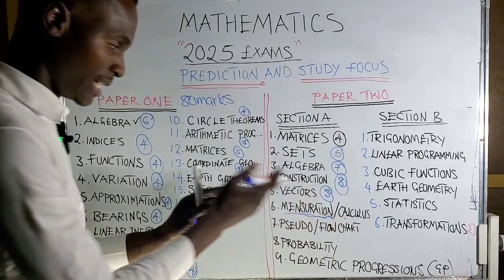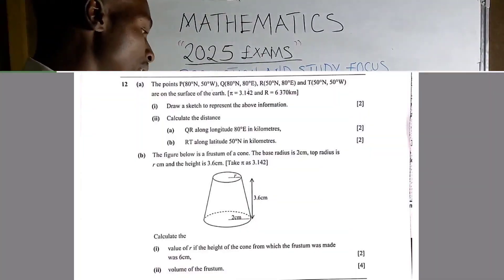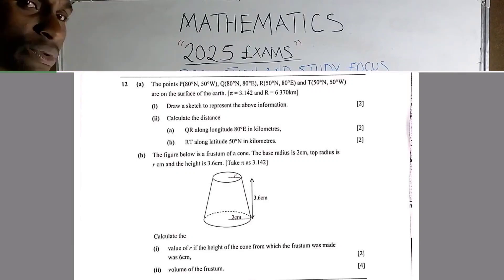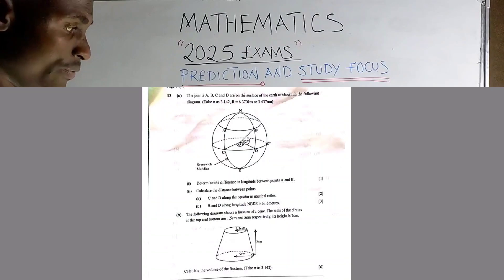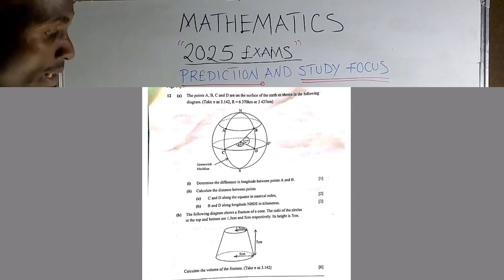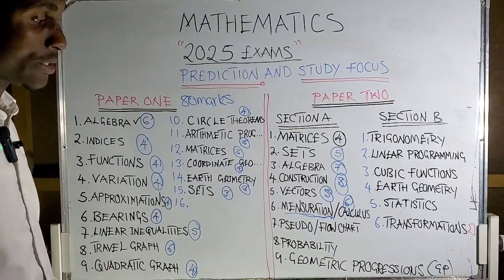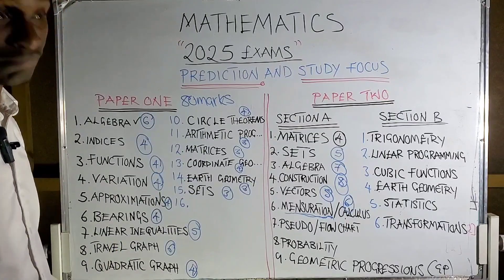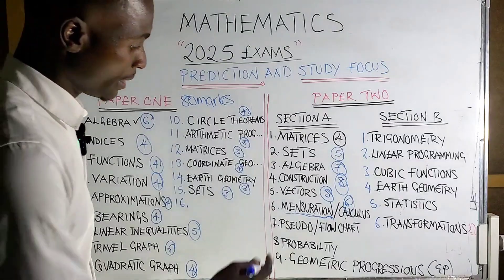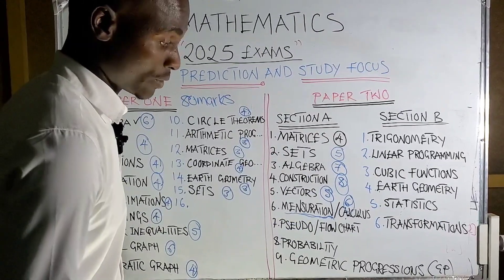Calculus in section A — or it may come in section B with mensuration. Don't get confused about which section it's in. Just know that it carries six marks. N over two is six marks.